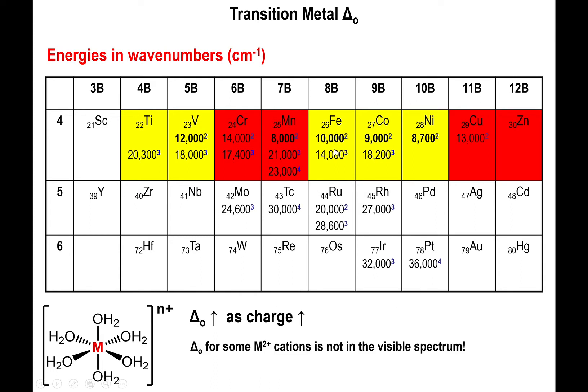Some values, like 8,000 inverse centimeters, don't even fall in the visible spectrum — they're technically in the infrared range, so we don't see those colors. We have machines that can detect infrared and UV light, but you wouldn't be able to see much of a color with those complexes.